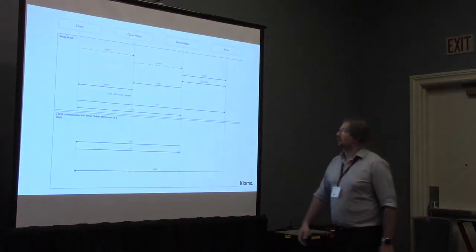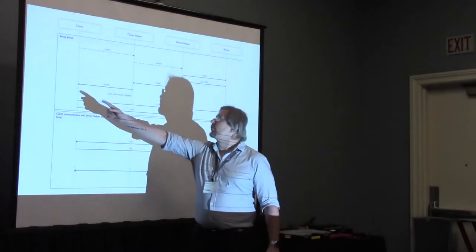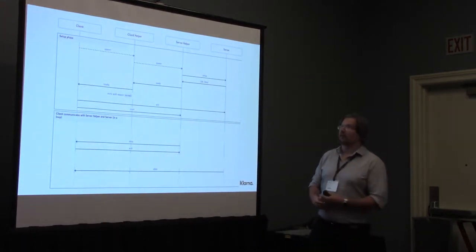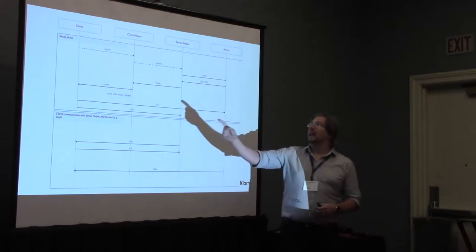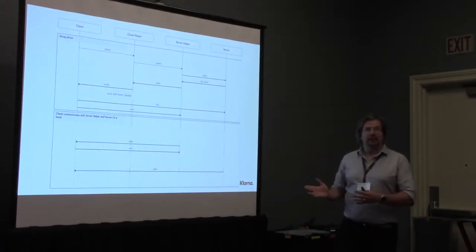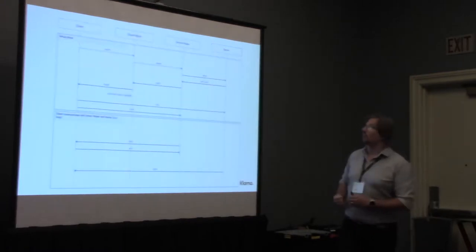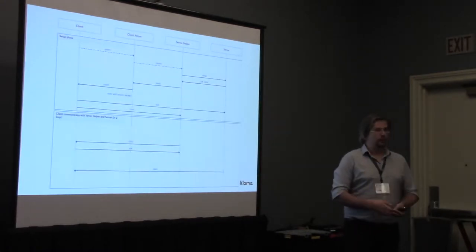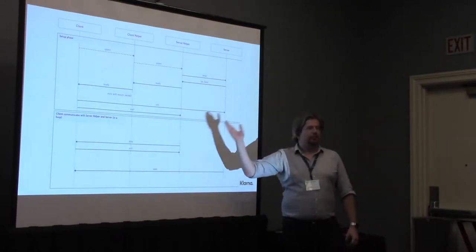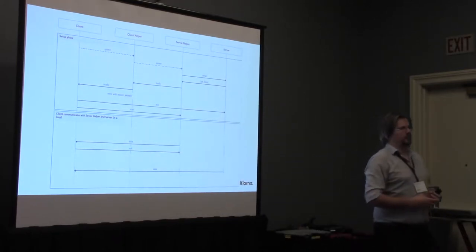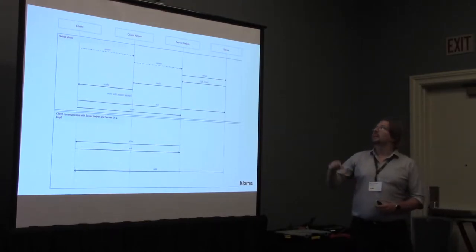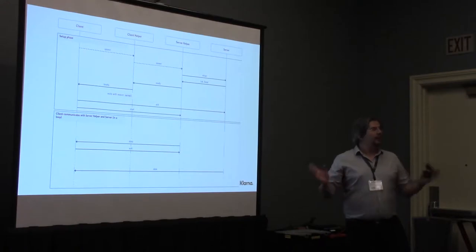Here we have a client process that wants to set up communication with the server. In order to avoid blocking during this setup, the client spawns the client helper. The client helper in turn will spawn the server helper process remotely on the server processing node, which after some preparation will do a gen_server call for the server and get back some data, which is passed back via these intermediaries to the original client. Then the setup is concluded by sending an acknowledgement from the client to the server and the server helper, and they can start communicating.